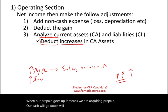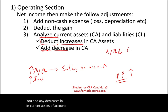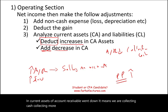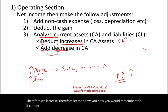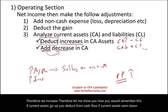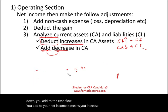The opposite is also true: you add any decreases in current assets. If accounts receivable went down, it means we are collecting more cash from customers than we are selling on account, so we increase. To summarize: if current assets go up, you deduct from cash flow; if current assets went down, you add to the cash flow — that means you increase your cash flow. This is for the assets.